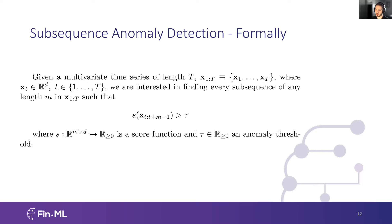More formally, what we're trying to do is find any subsequence of size n within a multivariate time series of length t, where a score function is higher than a predefined threshold. Whenever the anomaly score — a function s that takes as input a time series of size m — is greater than an anomaly threshold, we identify a subsequence anomaly.